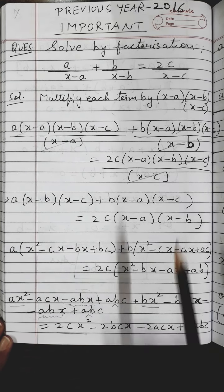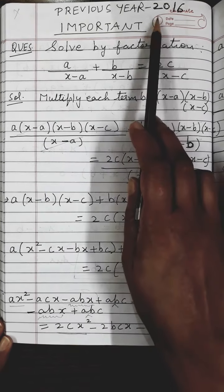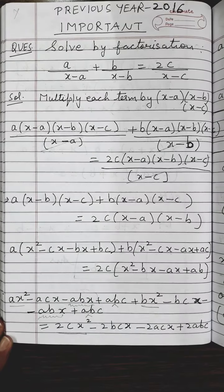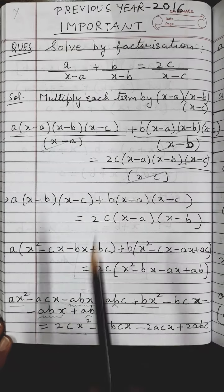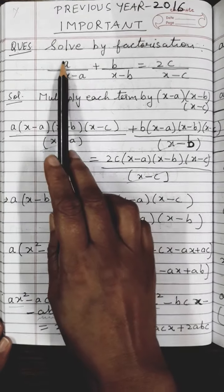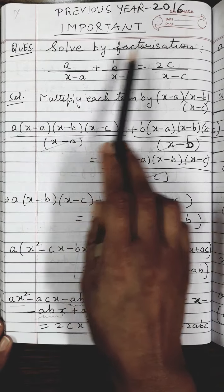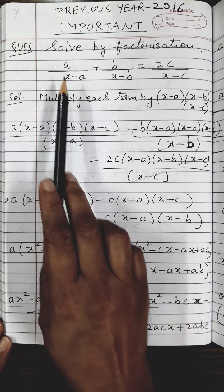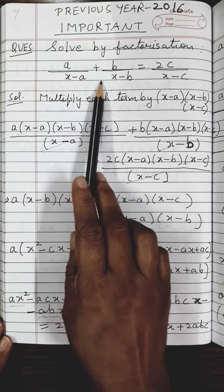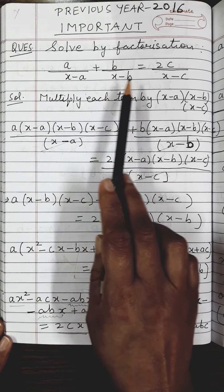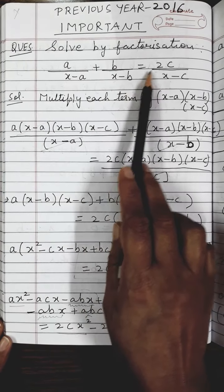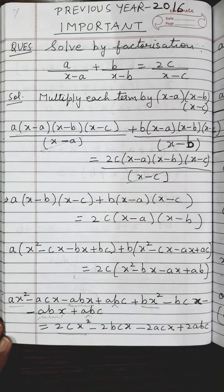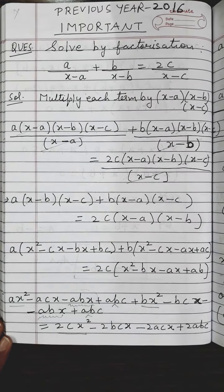This question was asked in year 2016. The question says: solve by factorization — a upon x minus a, plus b upon x minus b, equals 2c upon x minus c.